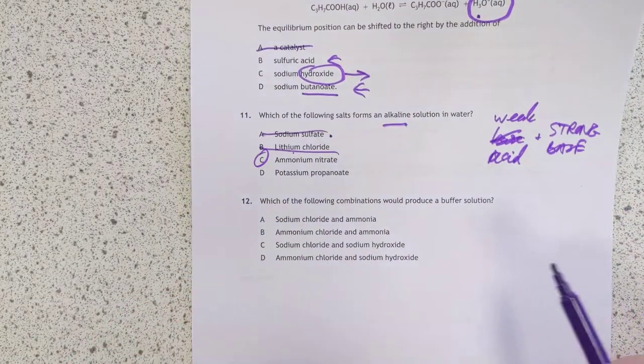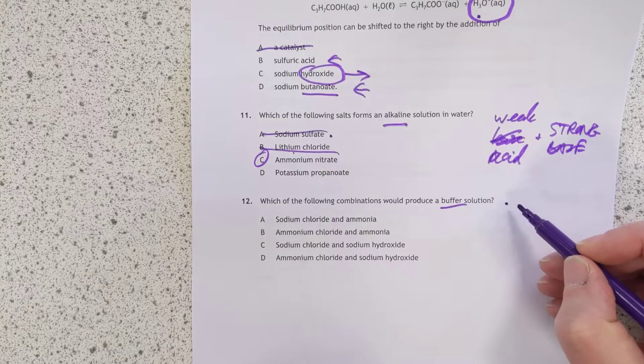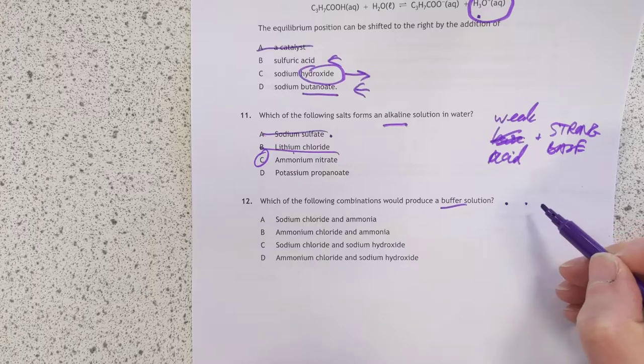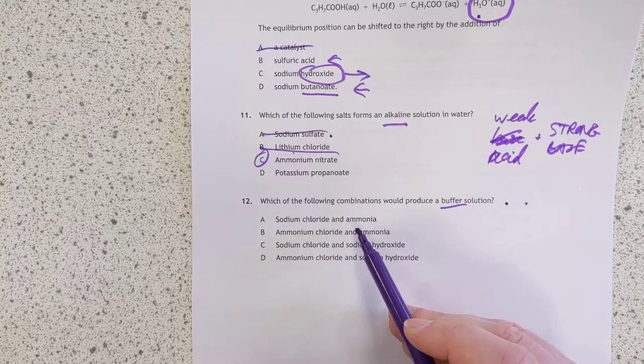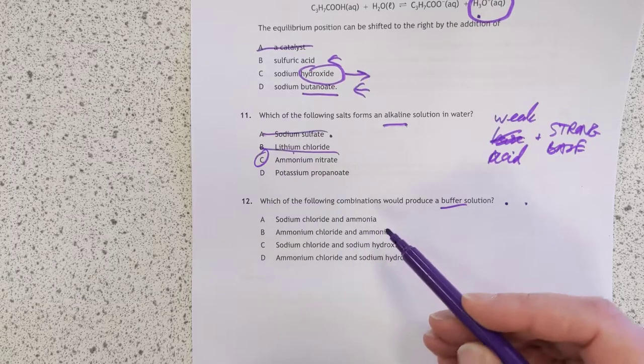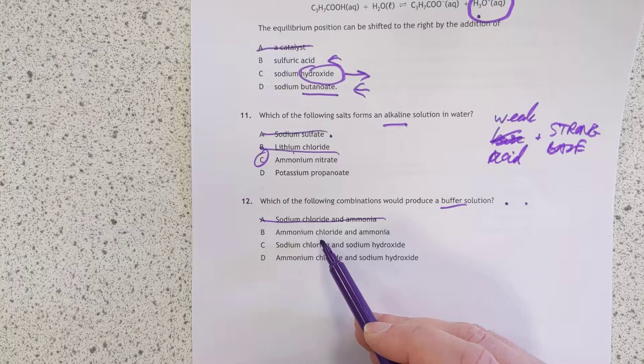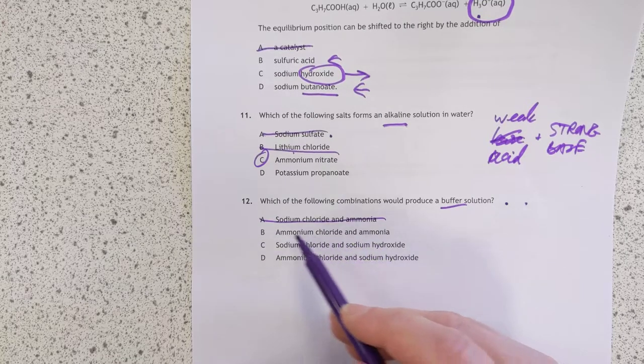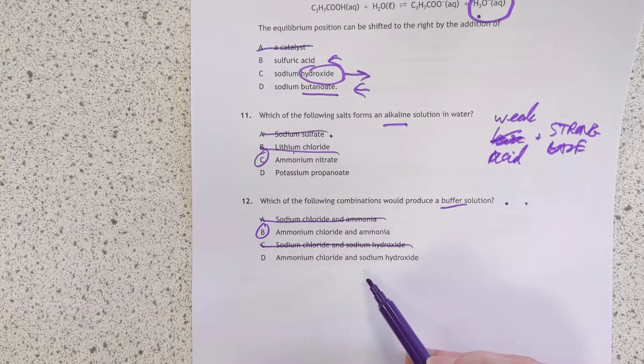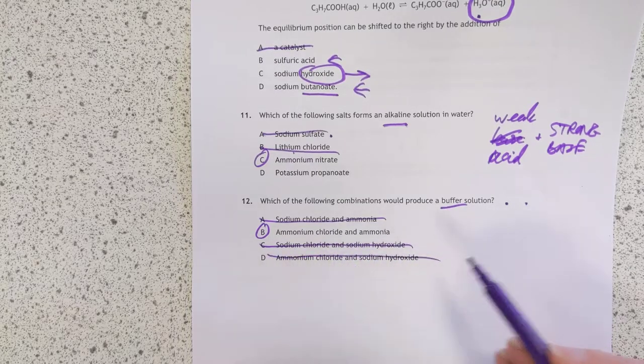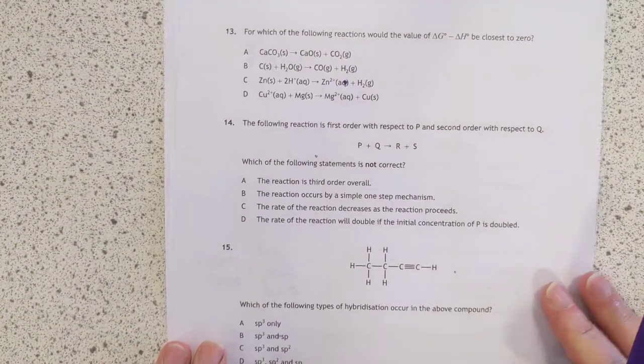Number 12. Which of the following combinations would produce a buffer solution? A buffer solution is a weak acid, or a weak base, and a salt of that weak base put together. So, no, that's not an ammonium salt. Ammonium chloride, and ammonia, that sounds promising. Sodium chloride, and no, that's a strong, and that's strong as well. This seems relatively straightforward so far. Famous last words.